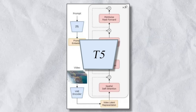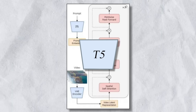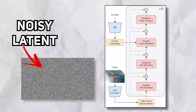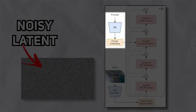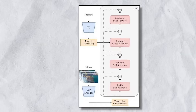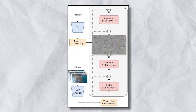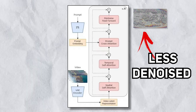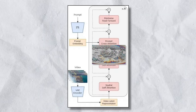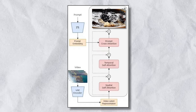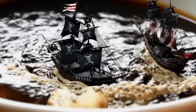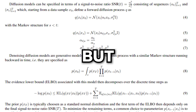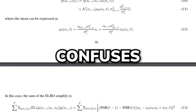In the generation stage, you just need to pass in a noisy latent conditioned on the T5 text prompt, then the model runs as a denoising transformer, where you iteratively take the less-denoised output at the end and put it back into the front to denoise it even further. Then the fully denoised output is reformatted together as a generated video.